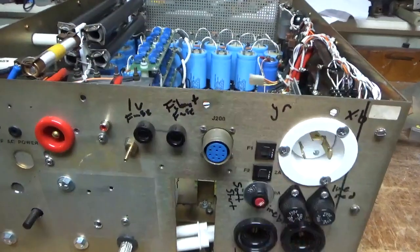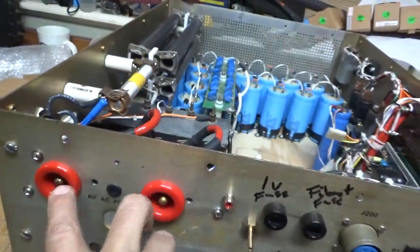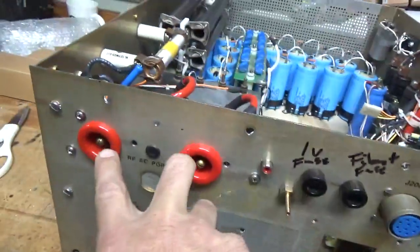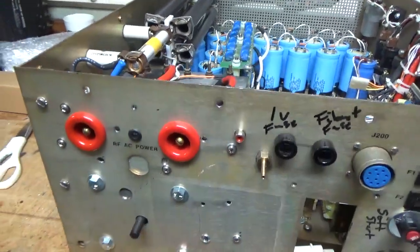It has fuses, and this is the switch side of the plate supply, filament. Now these are 250-amp rated, and these are 100-amp rated. These are for the filament connections.